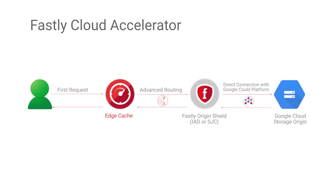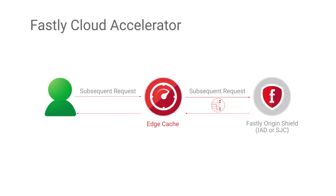From there, the content is then delivered to the end user and cached on the origin server and the edge cache server. When subsequent requests hit the edge cache in the future, the content will be there already. If content was requested from an edge node that doesn't have that content in the cache, it will fetch it from the Fastly origin servers.